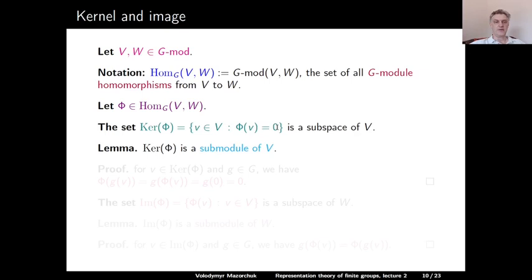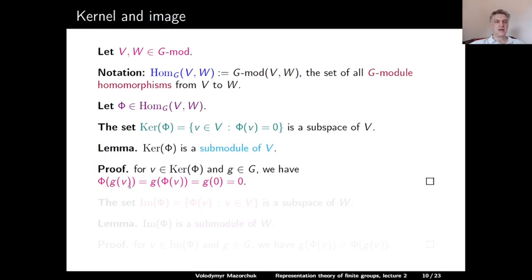Lemma: ker(φ) is actually a submodule of V. Proof: for any v ∈ ker(φ) and any g ∈ G, applying φ to g·v — using that φ is a homomorphism of G-modules — gives g·φ(v). Since v is in the kernel, φ(v) = 0, so we get g·0 = 0 since g is a linear operator. This proves our lemma.